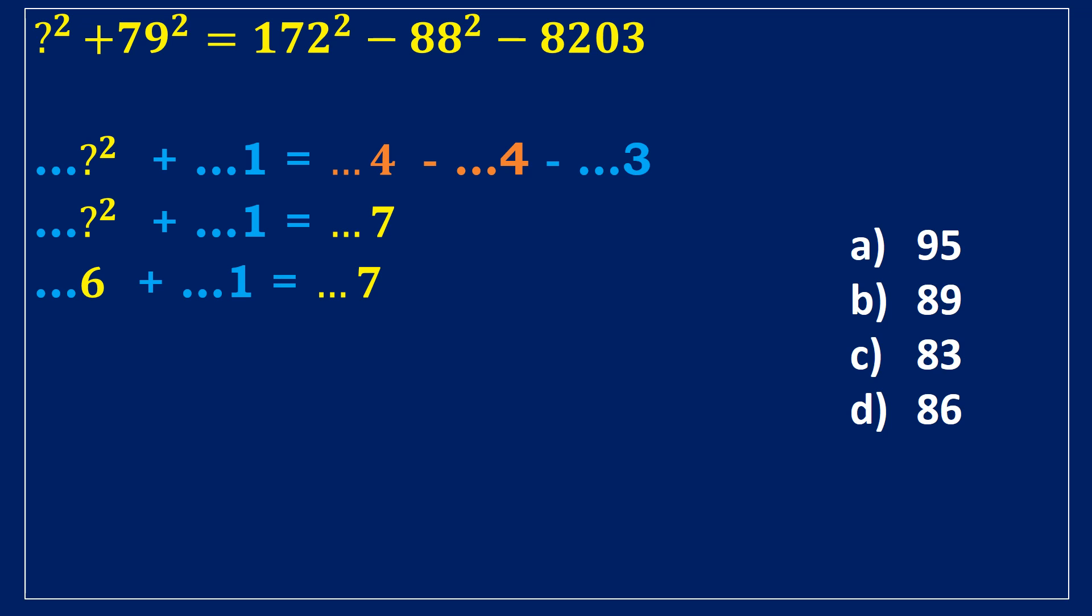Now, look at the answer options. Options A, B, and C do not end with 6, hence eliminated. Option D value ends with 6 and it is a correct answer.